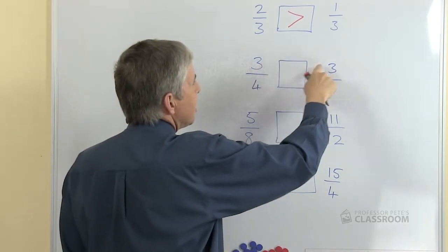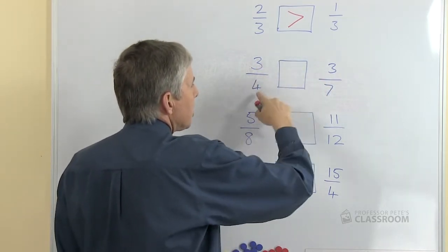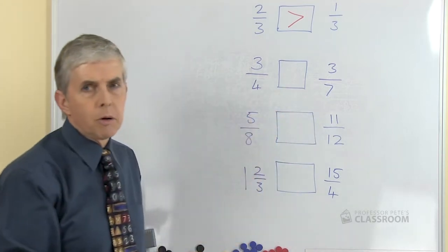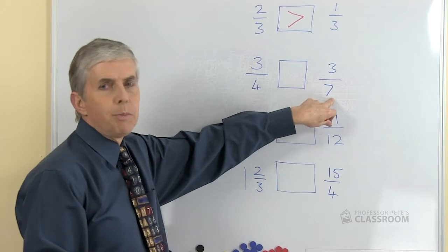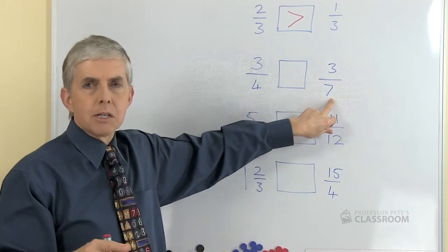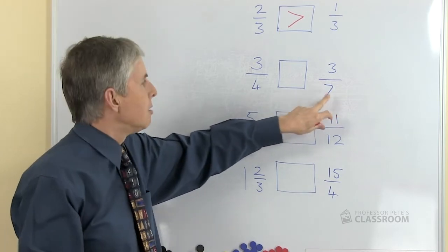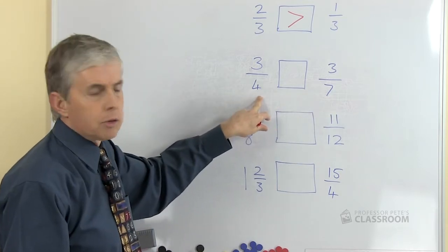In other words, if the numerators are the same, the number on the top, we can think carefully about the number on the bottom. What do we know about common fractions? As the denominator gets bigger what happens to the pieces? They get smaller don't they? So a seventh is smaller than a quarter or a fourth.